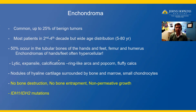Histologically, enchondromas show nodules of well-differentiated hyaline cartilage surrounded by bone and bone marrow. The chondrocytes are small and lymphocyte-like. Importantly, the low-power view of an enchondroma does not show bone destruction, bone entrapment, or a permeative growth pattern. Enchondromas will have IDH1 and IDH2 mutations.